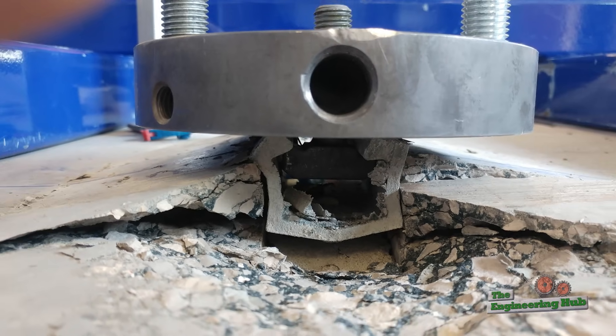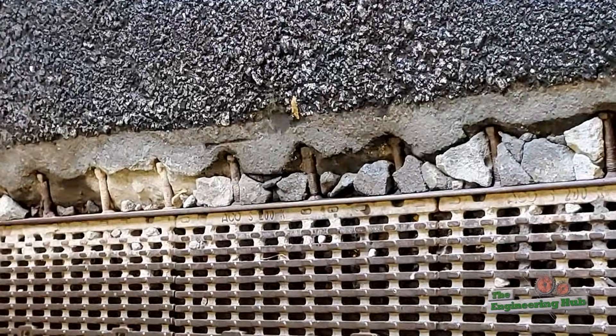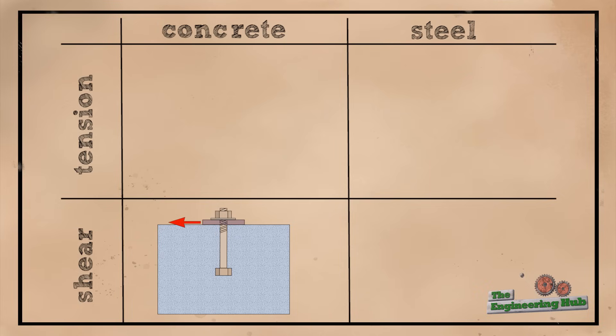Concrete anchors can fail catastrophically, and many failure mechanisms are possible between shear failure, tension failure, concrete failure, and steel failure.